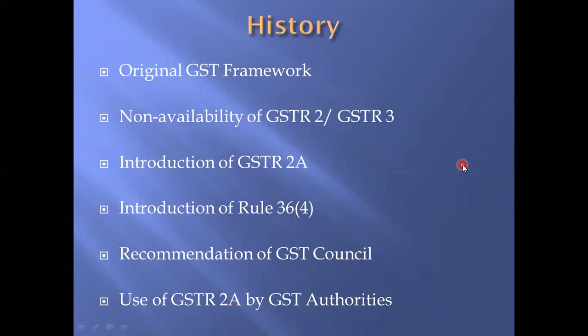We all know that the original GST framework was based on three forms: GSTR1, GSTR2, and GSTR3. The supplier of goods or services was supposed to file a statement of outward supplies in GSTR1 by a certain date, which would appear in the recipient's GSTR2, and based on those actions GSTR3 would be filed by the recipient along with discharge of liability — covering what is their liability and what is their input tax credit. That was the thought process. But GSTR2 and GSTR3 never went live.